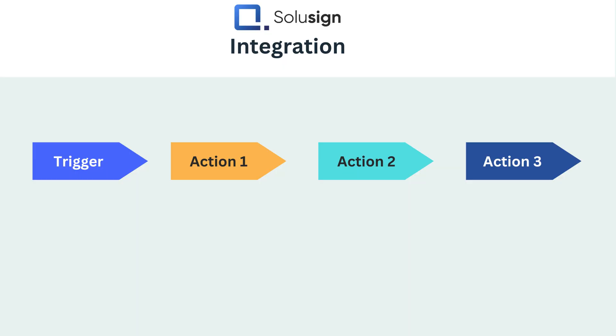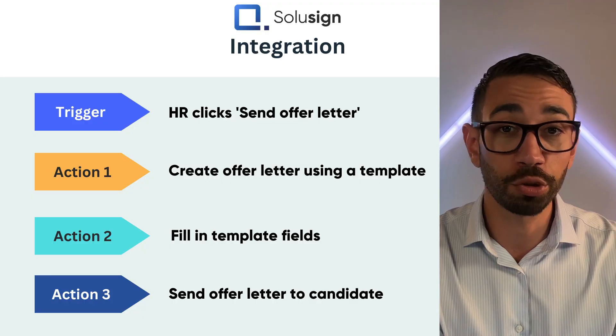Once you've decided which integration platform you'll be using, you can start building your automations. An automation always has a trigger followed by actions. The trigger is the thing that needs to happen for the automation to start running. Actions are the tasks that the automation will do instead of you doing it manually.